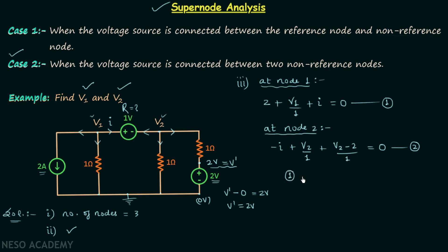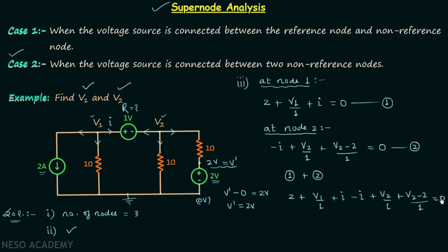Now we will add equation number one and equation number two. This gives: 2 + V1/1 + i − i + V2/1 + (V2 − 2)/1 = 0. The plus i and minus i cancel out.